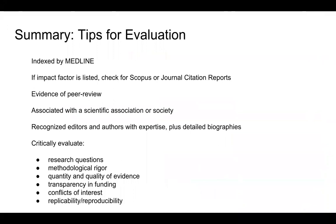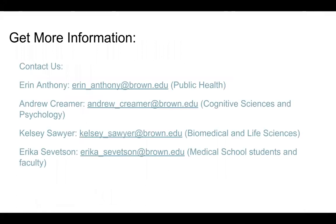In summary, here are some tips for evaluating journals when you're doing research. Check to see if the journal is indexed in Medline. If an impact factor is used, check to see whether it is from Scopus or Journal Citation Reports. Look for evidence of peer review. Check to see if the journal is associated with a scientific association or society. See if there are recognized editors and authors with expertise in the topic area of the journal, and see if you can find detailed biographies of these editors. Critically evaluate the research question, the methodological rigor, the quantity and quality of the evidence cited, whether they are transparent in their funding and list conflicts of interest, and check for replicability and reproducibility of the research. If you have any other questions about this process, please feel free to reach out to any member of the sciences team. Thank you.